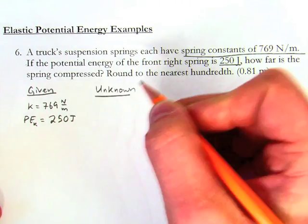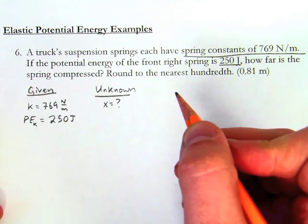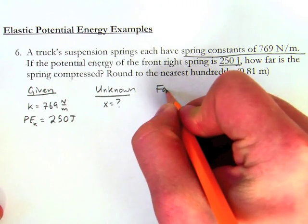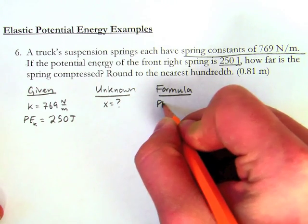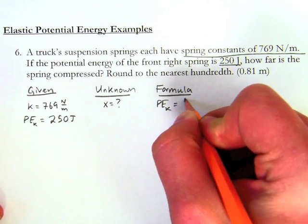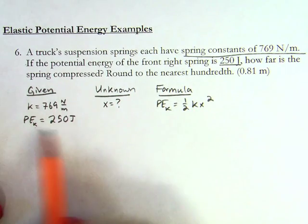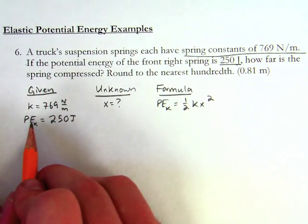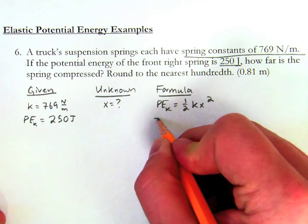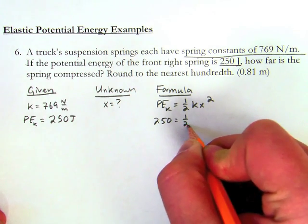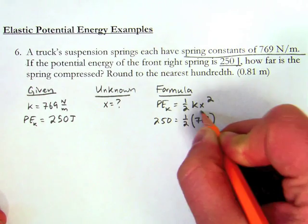And just like the one before, I know that the distance compressed is going to be x. So my formula is potential energy, my elastic potential energy, equals one-half kx squared. So all I do is take my givens and plug it in. 250 joules equals one-half of 769 times x squared, and I'm looking for x, so I leave x squared by itself.